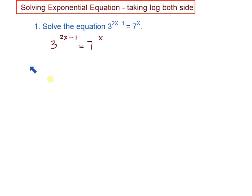You look at the base on the left-hand side, which is 3. The base on the right-hand side is 7. So you do not have equal bases. In this case, you have to put log both sides of the equation.